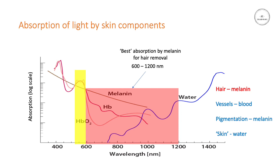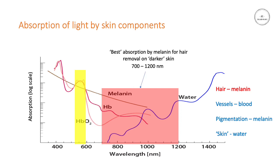Best absorption for hair removal is to target the melanin between 600 and 1200 nanometers. But if you want to treat hair in darker colored skins, the dark skin is going to have more melanin in the epidermis and the basal layer. So I would suggest a higher filter, around about 700 nanometers or thereabouts. This will mean you'll have less absorption in the epidermis and therefore less potential damage. It also means you have less absorption in the hair, but you should still get sufficient absorption without damaging the epidermis.